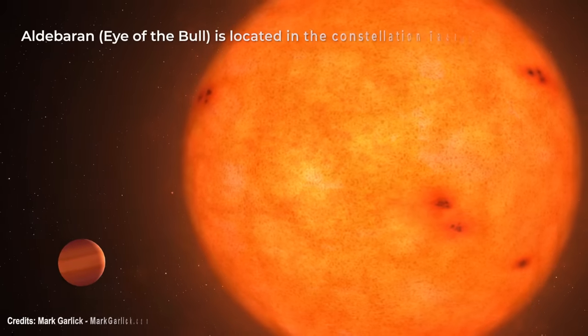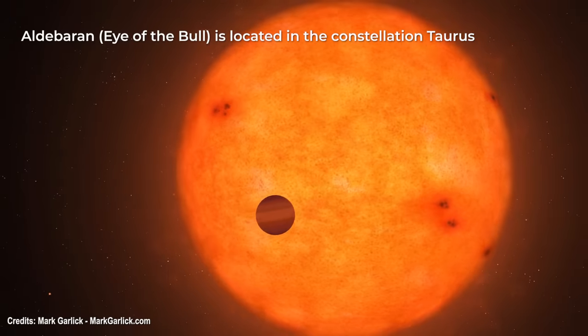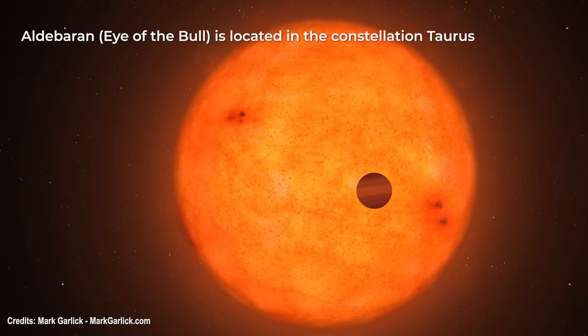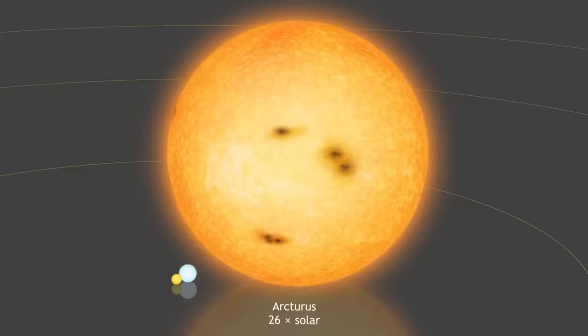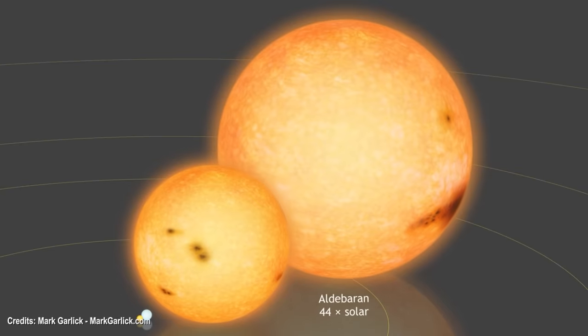Aldebaran, also known as the eye of the bull, is one of the brightest stars in the night sky and is located in the constellation Taurus. It is a red giant star that is about 44 times larger than the sun. It also has a companion star, but we cannot see it with the naked eye.